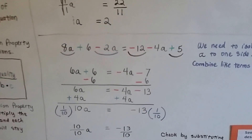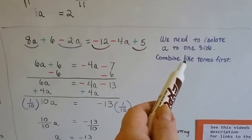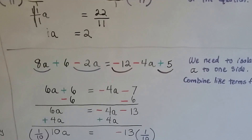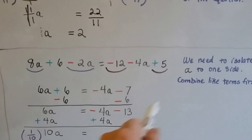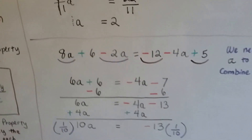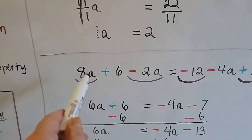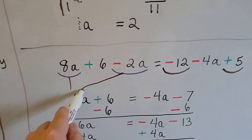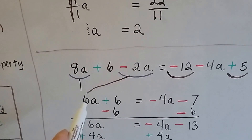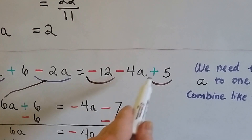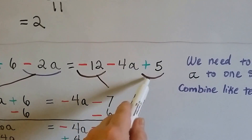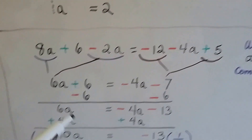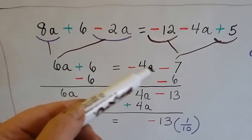Sometimes we need to combine like terms first before isolating the variable. We've got 8a minus 2a on one side and negative 4a on the other, plus the constants 6, minus 12, and plus 5. Combining like terms on the left: 8a minus 2a is 6a. On the right: negative 12 plus 5 is negative 7. So our equation becomes 6a plus 6 equals negative 4a minus 7.